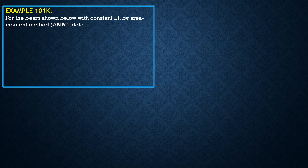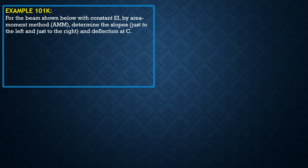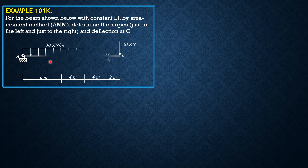For the beam shown below with constant EI, by the area moment method, determine the slopes just to the left and just to the right and deflection at C. Here is the given figure.